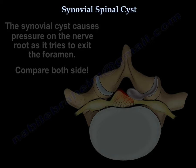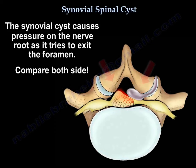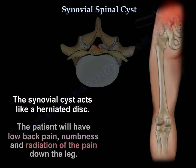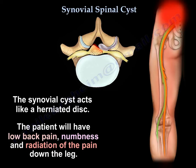It causes pressure on the nerve root as it tries to exit the foramen. Compare both sides — the cyst acts like a herniated disc. The patient will have low back pain, numbness, and radiation of the pain down the leg.